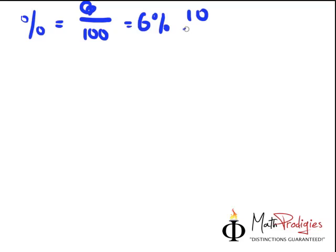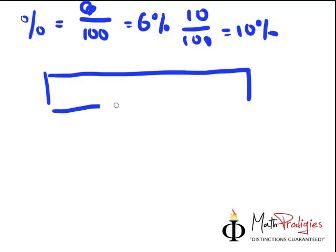For example, 10 over 100 equals to 10%. So basically, if I were to draw for you a model, it will look like this. It will look like 100 units over here.